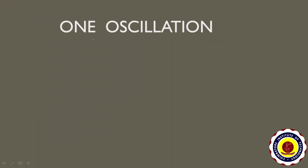Now let us understand the concept of what is meant by one oscillation. If you take the wire of the torsional pendulum with the disk, initially it is at rest. You can choose any point of consideration — a protrusion or a chalk piece marking can act as a reference point. After oscillating the pendulum, this point of consideration moves to the left extreme, then comes to the center, goes to the right extreme, and again comes to the center — which marks one oscillation.